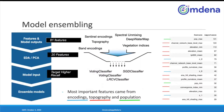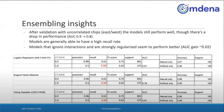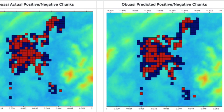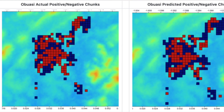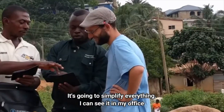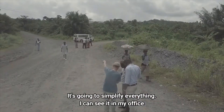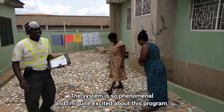Using these data sources, the Omdena team ended up generating 81 features, and after a round of exploratory data analysis, they finalized the top 20 most relevant features for predicting mosquito breeding grounds. They then set out to build and validate models that could best capture the information in each of the data sources. The final models were able to predict whether a selected water body is a potential breeding ground for the Anopheles mosquitoes or not. One field officer noted: 'I'm very grateful to our friends from Peace Drive for introducing these apps to us. It's going to simplify everything — I can sit in my office and monitor the activities of the field. The system is phenomenal and I'm quite excited about this program.'